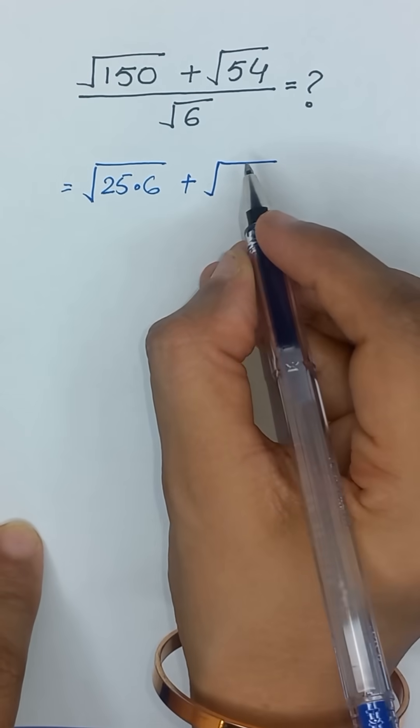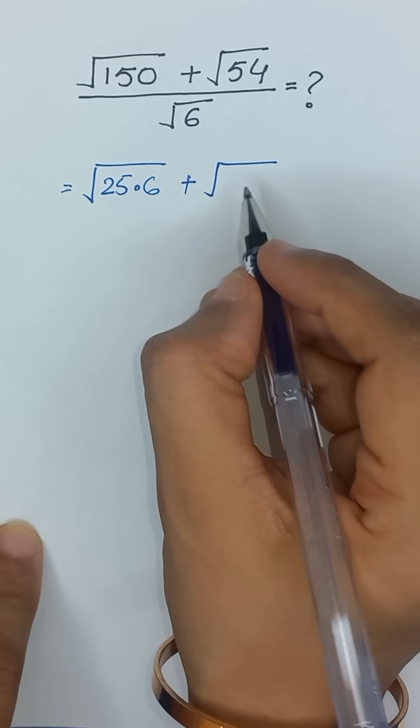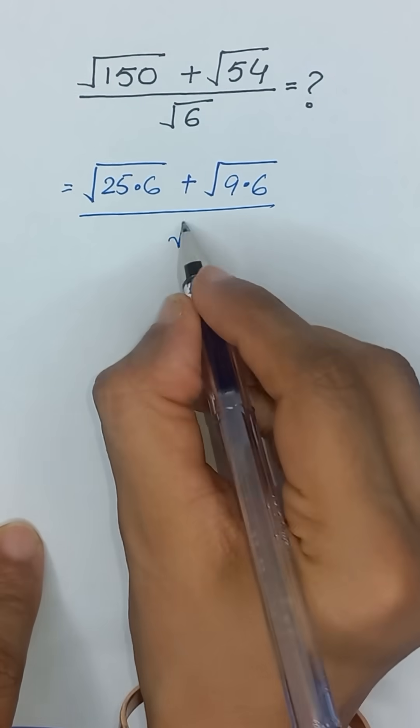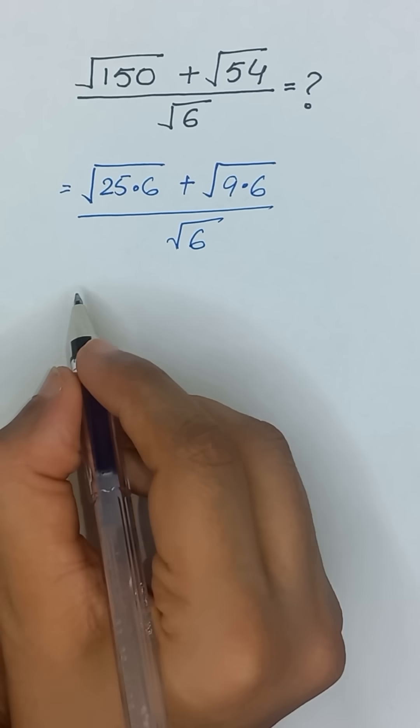Square root of 54 is same as 9 times 6 divided by square root of 6.